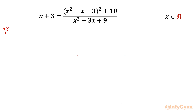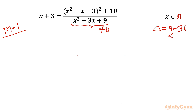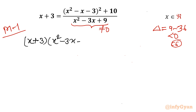Let's get started with method number one. First, the denominator cannot be equal to zero. If you look at only the discriminant, it is coming out as 9 minus 36, which is negative, so complex solutions will be there — no conditions applied. Let us cross multiply the given terms. I can write the LHS as (x + 3)(x² - 3x + 9), and the right hand side as (x² - x - 3)² + 10.